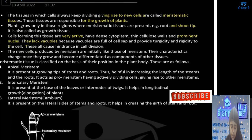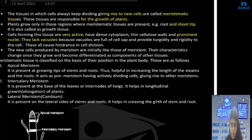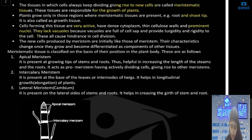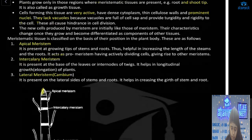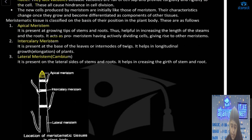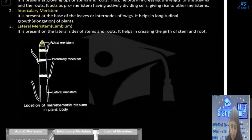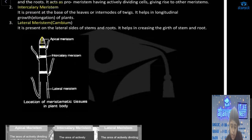Meristematic cells are of three types: apical meristem, intercalary meristem, and lateral meristem. Apical meristem is present at the tips of roots and stems and increases the length of the plant. Intercalary meristem is present at the nodes.